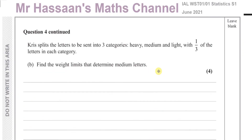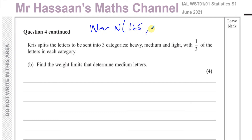Now for part B. Chris splits the letters into three categories — heavy, medium, and light — with one third of the letters in each category. The weights are still normally distributed with mean 165 and variance 35 squared.